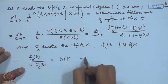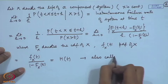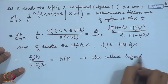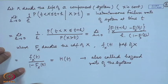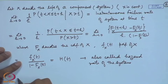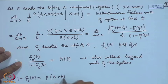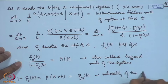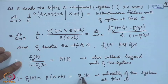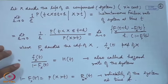We call this h(t), also known as the hazard rate of the system. The quantity 1 − F_X(t), which is P(X > t), is called the reliability of the system at time t — that is, the probability of the system surviving till time t.